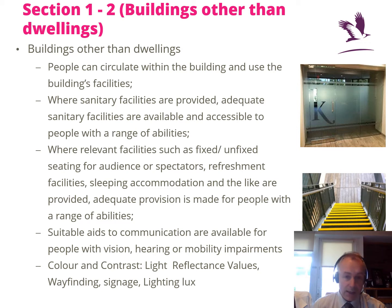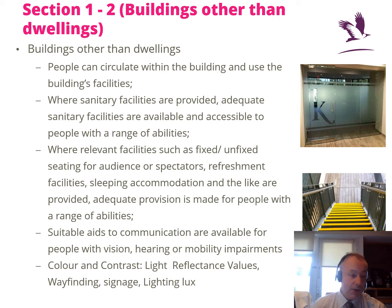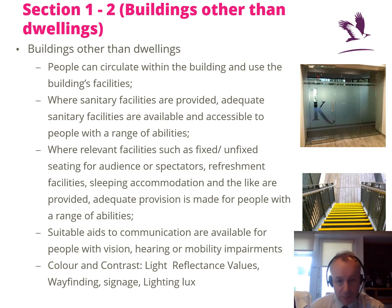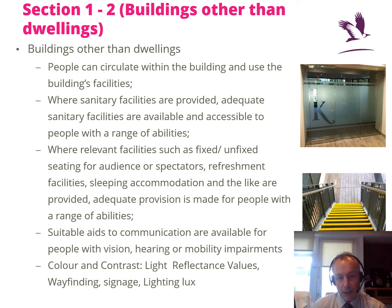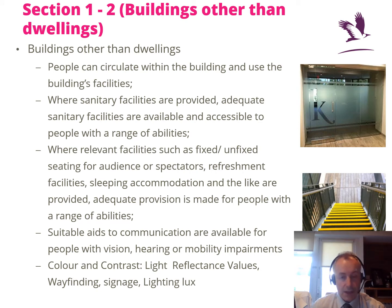Wayfinding is very important — it should be easy for people to get around the building, not just people with a range of abilities but everybody. Signage and lighting also feature, as they come up in Part B regarding emergency egress too. Specific lux levels are given: 20 lux on level approaches, 100 lux on ramps, and 100 lux on circulation corridors. The building must comply with these figures.